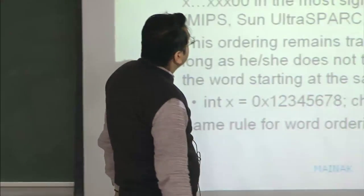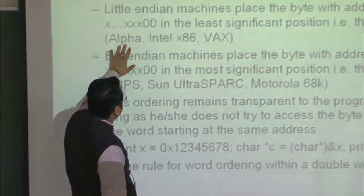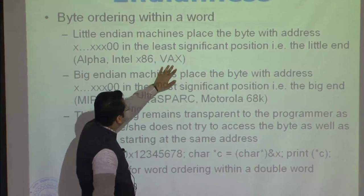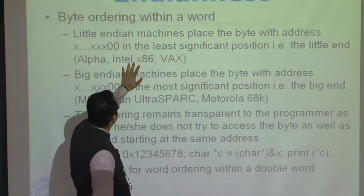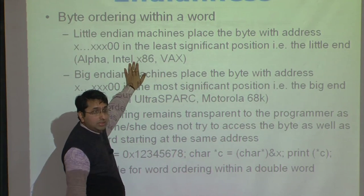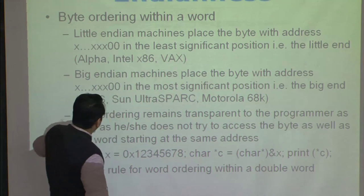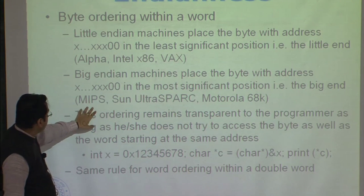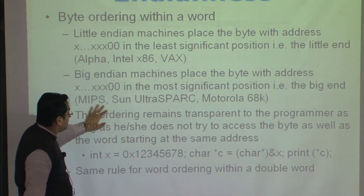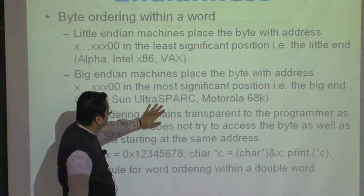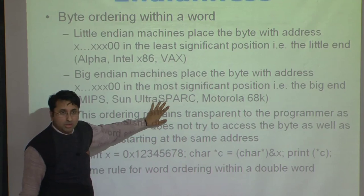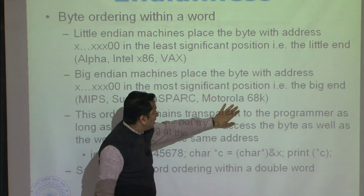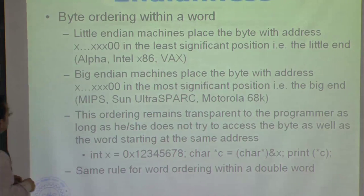In a big-endian machine, it is exactly the opposite: the byte at the lowest address is the most significant byte of the word. Examples: x86 (Intel/AMD) is a little-endian machine. On the big-endian side, MIPS is widely used in the embedded market; Sun UltraSPARC and Motorola are also big-endian. This ordering is transparent to the programmer as long as they do not try to access both the byte and the word starting at the same address.